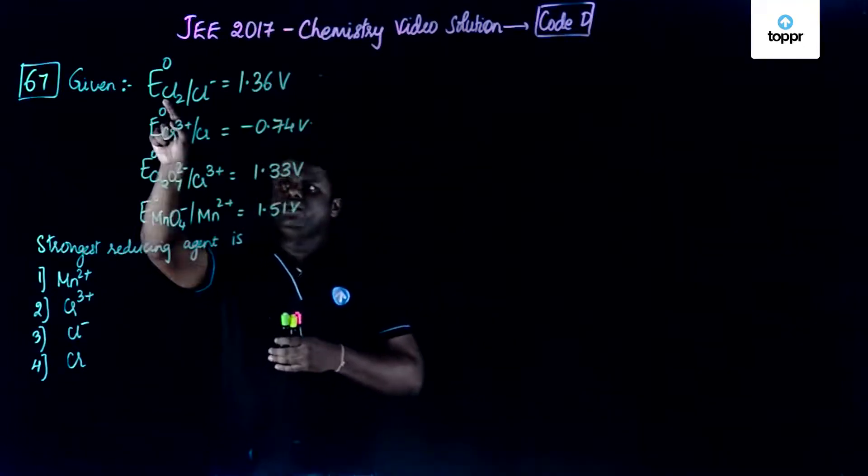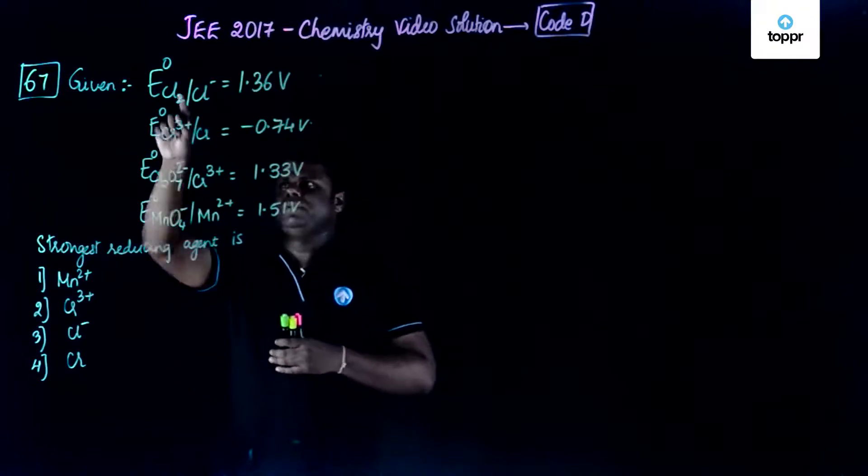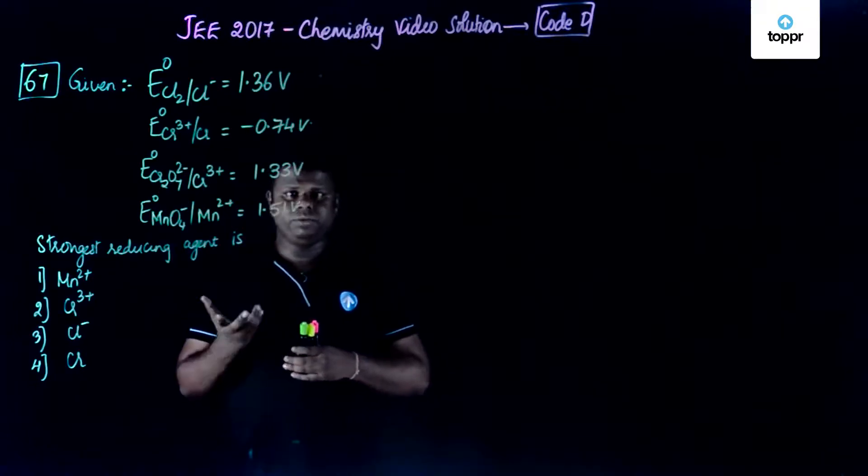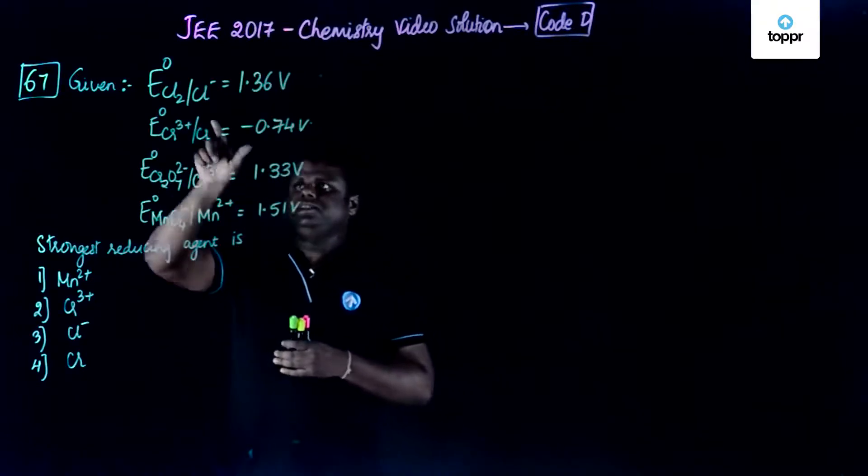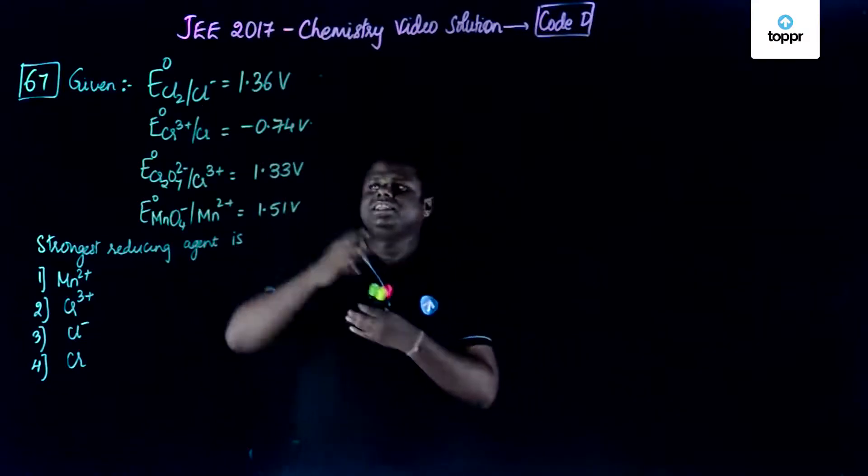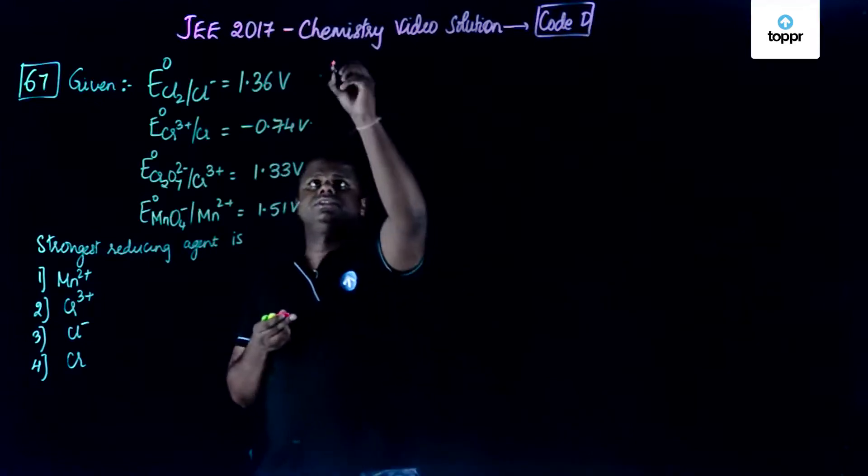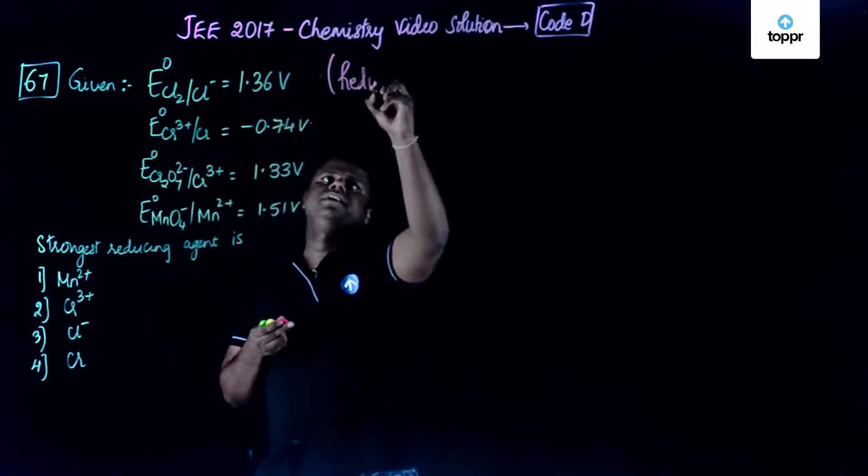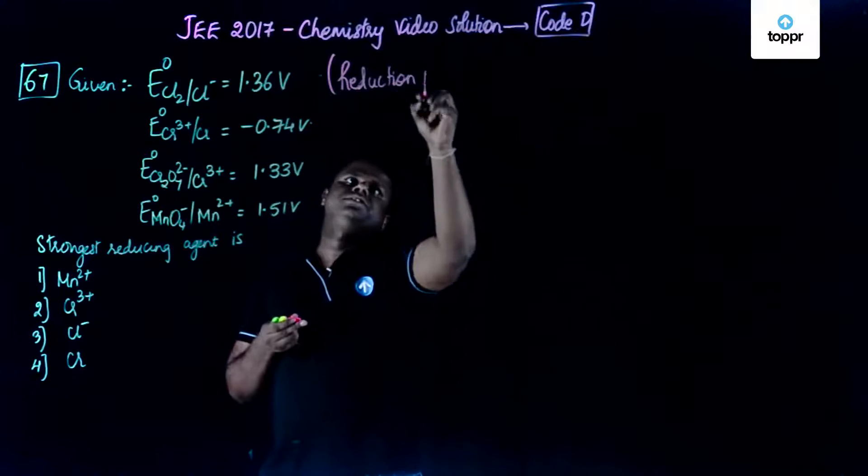So if you could see, Cl2 goes to Cl minus. That means Cl2, the oxidation state would be 0 because it's an uncombined state, and Cl minus is minus 1. Zero going to minus 1 means reduction is happening. So these are nothing but reduction potentials. All these are basically reduction potentials.